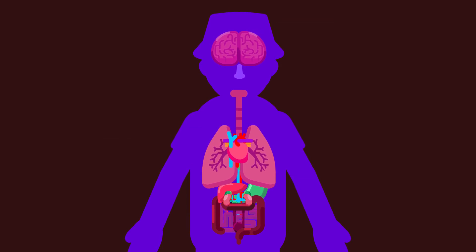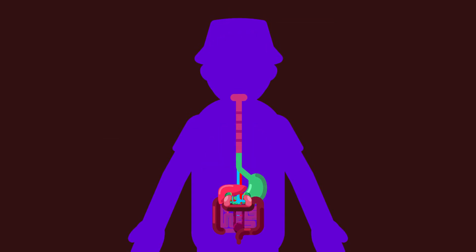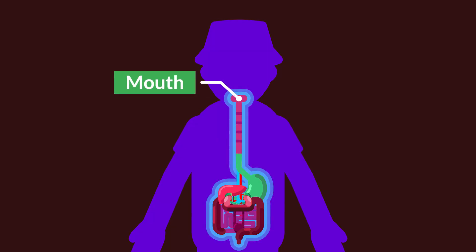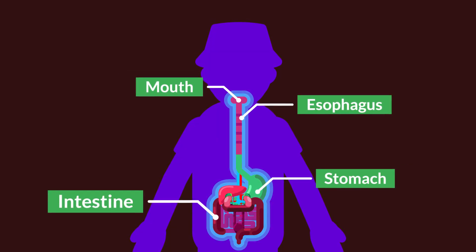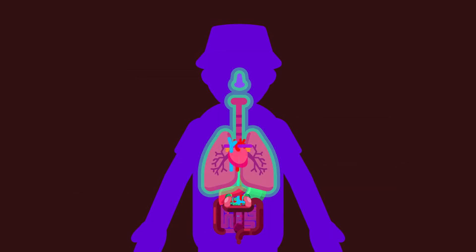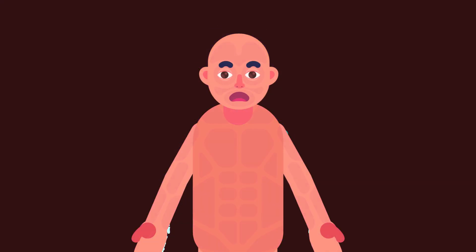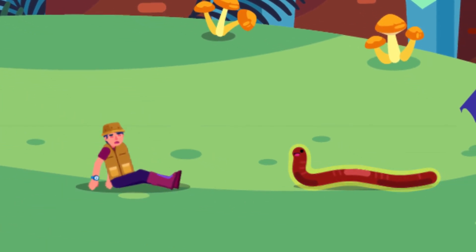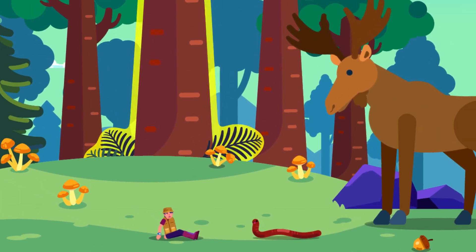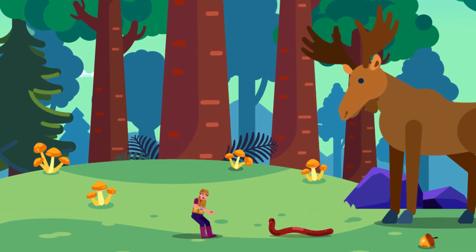Organs with closely related functions make up one organ system, such as the digestive system, which includes the mouth, esophagus, stomach, intestines, and anus. Several organ systems are organized together to form an individual. An earthworm, a red oak tree, and a moose are examples at the individual level.